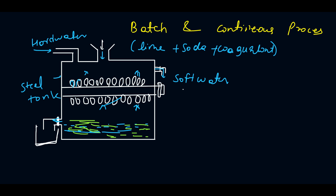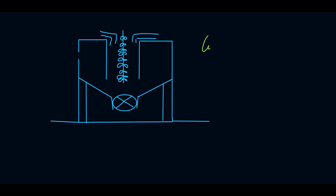In the continuous process, the stirrer is continuously stirring so the water is constantly agitated, making it a quicker process. Hard water is entered from here, and chemicals like soda, lime, and alum as coagulant are added inside. The mixture is continuously stirred, all sludge forms and settles down, and soft water rises upward and is removed from here.